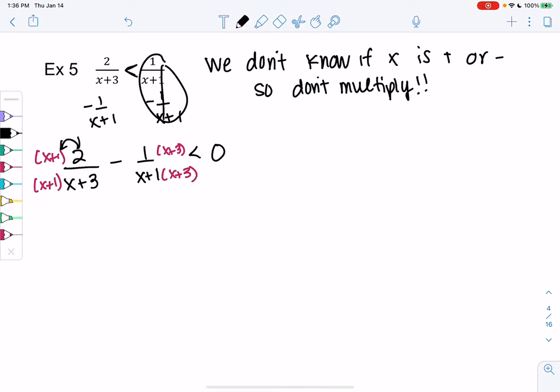So for the first one, we're going to get 2x plus 2 over x plus 1, x plus 3. And then we'll get minus x plus 3. Actually, let's just do x plus 3, and then we'll distribute the negative in the next step. All over x plus 1, x plus 3, less than 0.